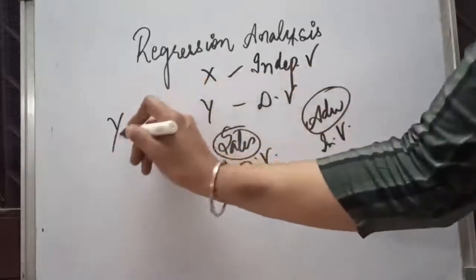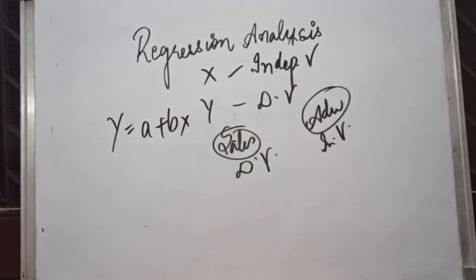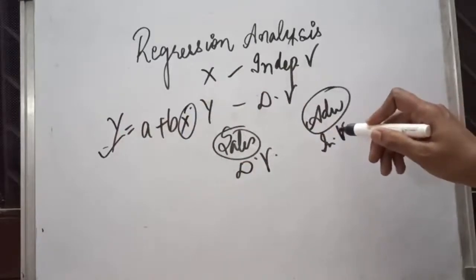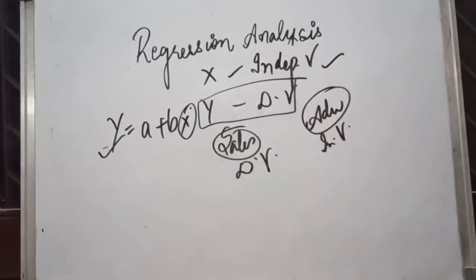The line that we use to find out the regression analysis is the same as in time series analysis: y equals a plus bx, where x denotes the independent variable and y denotes the dependent variable. Regression analysis is an absolute measure with the help of which we can estimate or predict the unknown value of one variable if the values of the other variable are known. So if we know the value of x, we can find out the value of y.